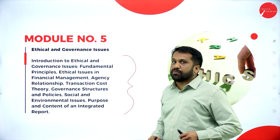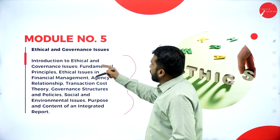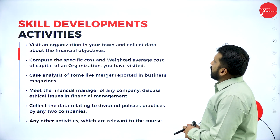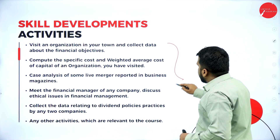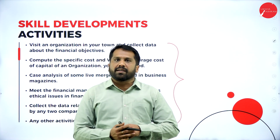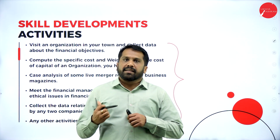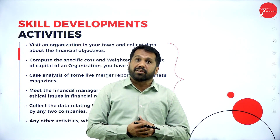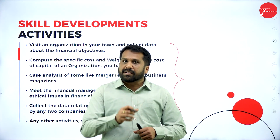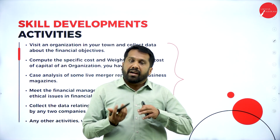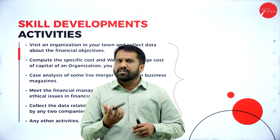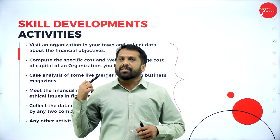Module five covers ethical and governance issues, which is a major unit — most theory questions will come from here. Skill development activities are tied to individual topics: first understand what cost of capital is, then do the skill development activity on that topic. Similarly, understand how companies make dividend decisions before moving to the skill development component.